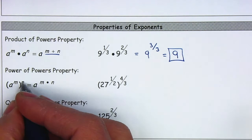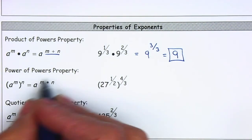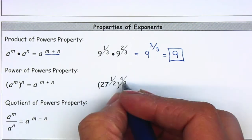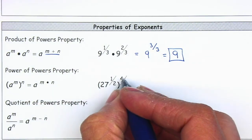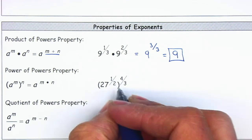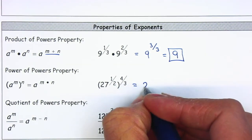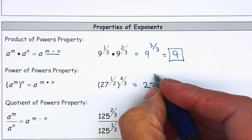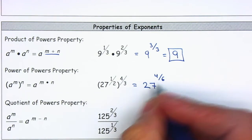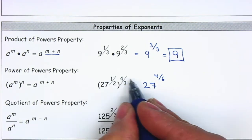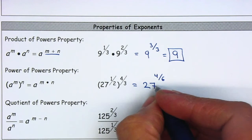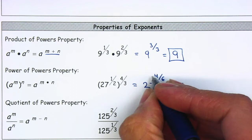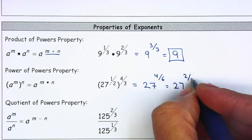When the exponent is outside, it's the power of powers property — we are going to be multiplying. In this case, we have 27 to the 1/2 and then we have an exponent of 4/3. We are going to multiply the exponents. The base will stay the same — 27. 1 times 4 is 4, 2 times 3 is 6. Remember, when you multiply, you just multiply across. Now let's go ahead and reduce our exponents: 4/6 divided by 2 gives us 2/3.